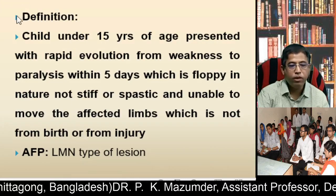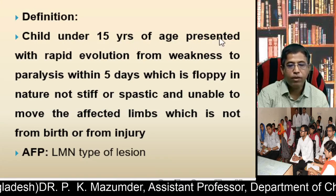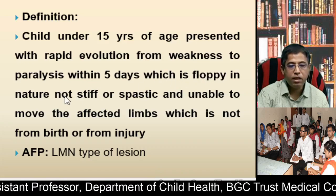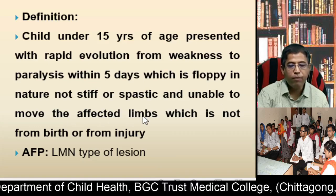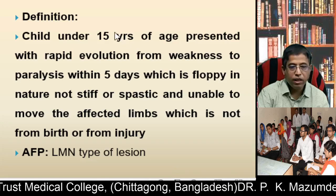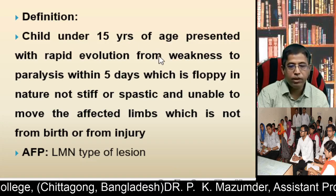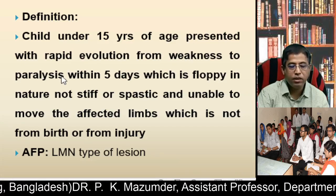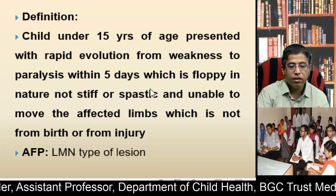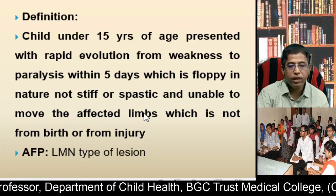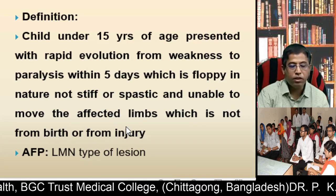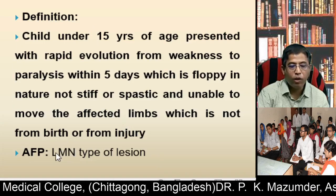Definition: Acute Flaccid Paralysis refers to children under 15 years of age who present with rapid evolution from weakness to paralysis within 5 days, which is floppy in nature — not stiff or spastic — and are unable to move the affected limbs, where the condition is not from birth or from injury. This flaccid paralysis is due to a lower motor neuron type of lesion.